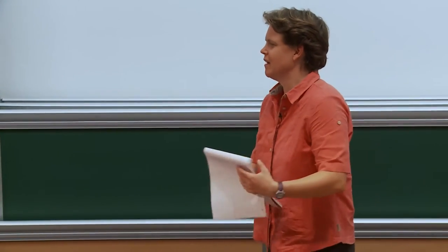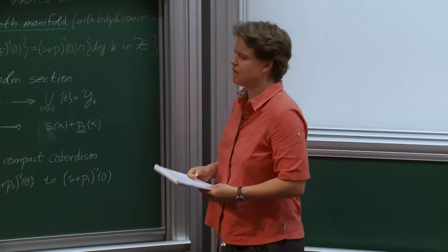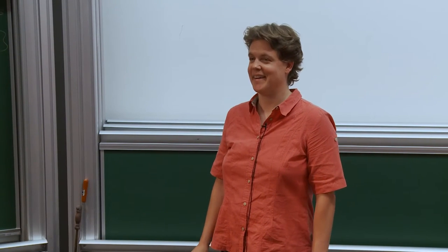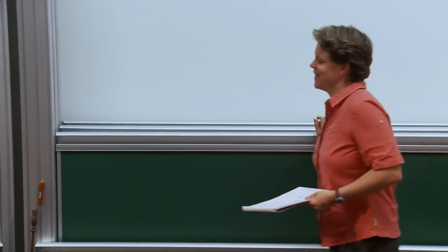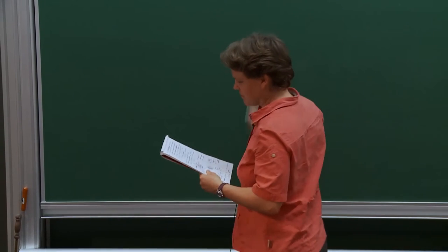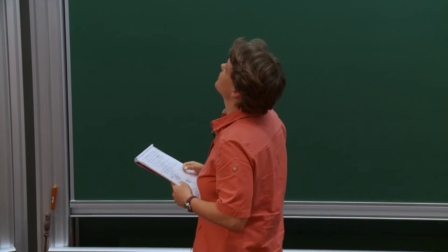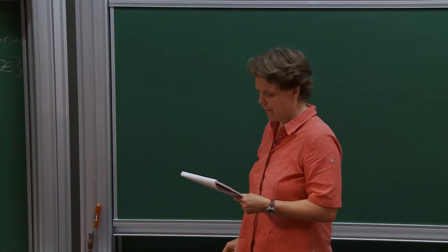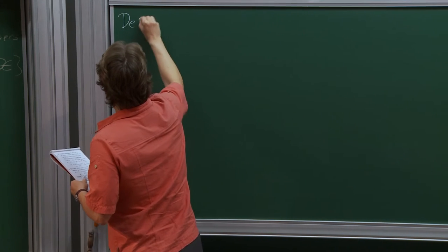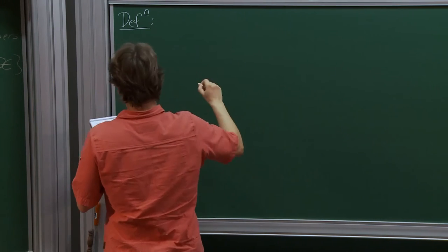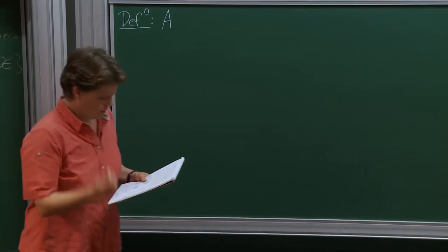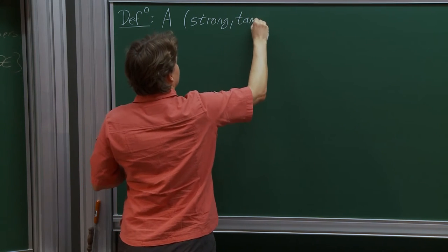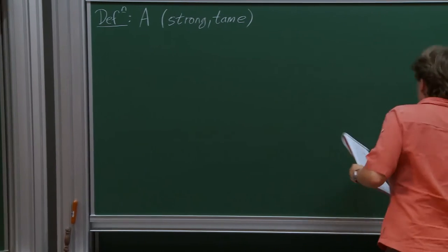The path p_t is gotten by going from p_0 to p_1 and then wiggling a little to get transversality. I want to say what a strong tame M-polyfold bundle actually is and fix notation so I can tell you what a Fredholm section is. I'll focus on the special case that has sufficed in all applications so far, which has the nice property of being automatically strong and tame.